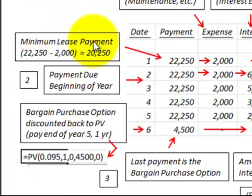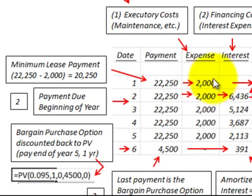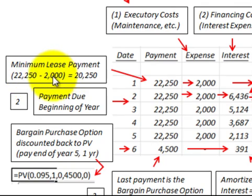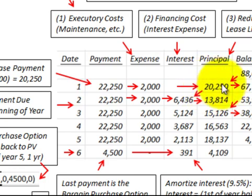The next thing we need to determine is the minimum lease payment. We have a payment amount of $22,250 per year, but that isn't the minimum lease payment. This $22,250 includes executory costs of $2,000, which we subtract out. So $22,250 less $2,000 gives us a minimum lease payment of $20,250, which is the beginning principal balance.